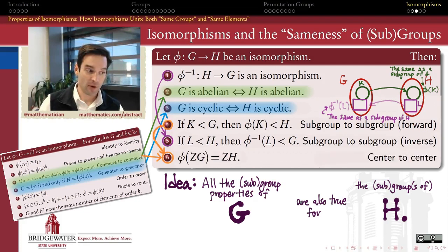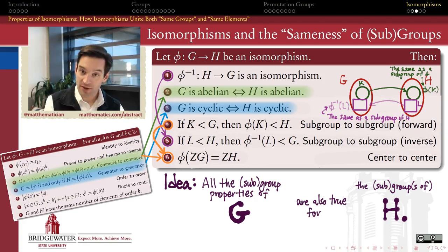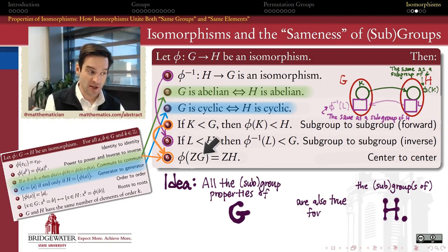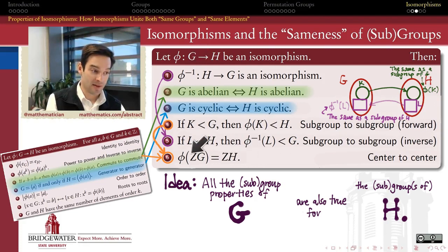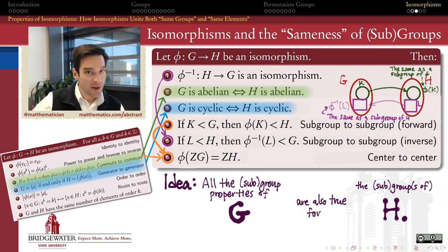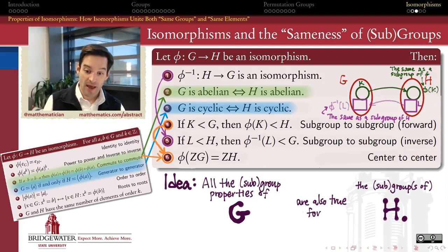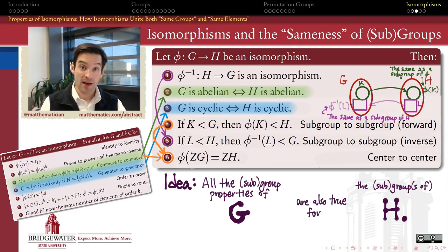Finally, as a further corollary, an isomorphism will carry the center of group G onto the center of group H. The center consists of all elements that commute with everything in the group. If an element commutes with everything in G, then by the commuting-elements-to-commuting-elements property, its image will commute with every element in H. Combined with the inverse property, it goes the other way as well. So it carries the center of one group onto the center of the other. This video and the previous video together form a good list of all the properties of elements, groups, and subgroups that we care about so far — and we care about them because they are preserved under isomorphism.